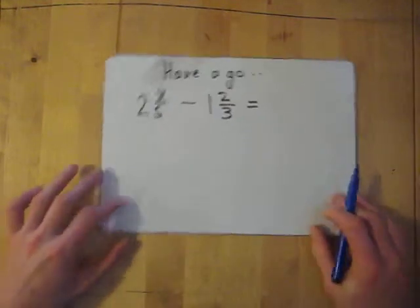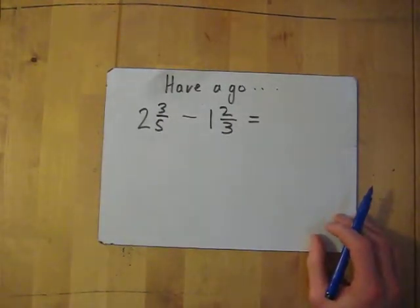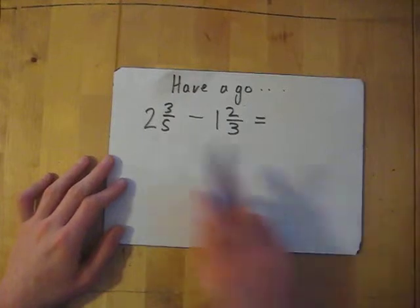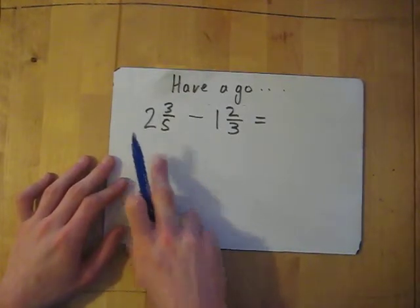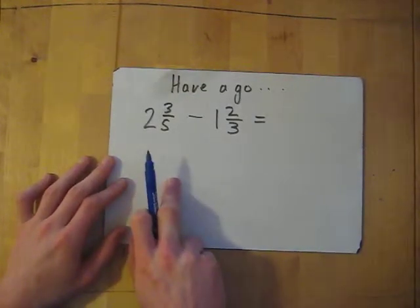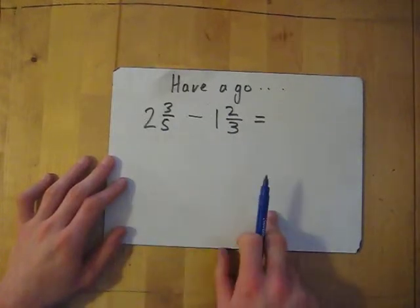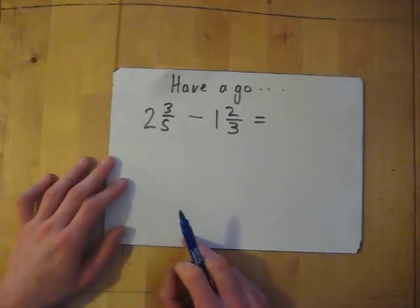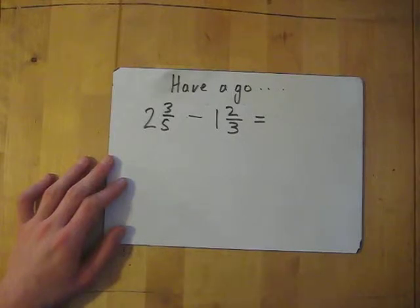Now for one for you to have a go at: we've got two and three-fifths take away one and two-thirds. Remember — convert to an improper fraction, find the common multiple, convert the fractions, and then take away the top and leave the bottom the same. Pause it now if you want to have a go; I'll go through the answers in three seconds.